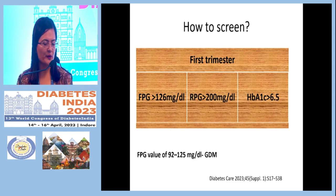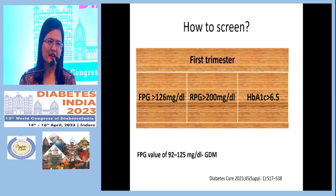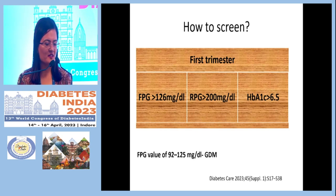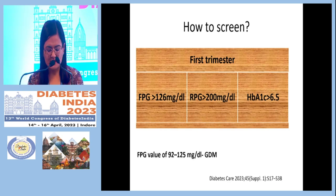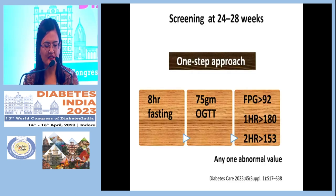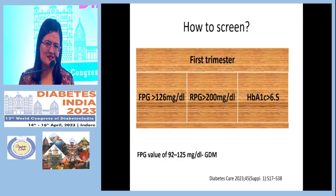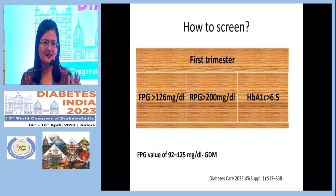In the first trimester, if fasting is more than 126, random more than 200, or HbA1c more than 6.5%, it is overt diabetes. If fasting is 92 to 125 in the first trimester, the patient has high risk of gestational diabetes. If fasting is less than 95, then screening should be done at 24 to 28 weeks.